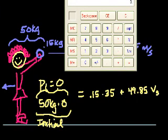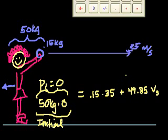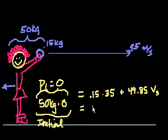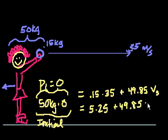So let's see. 0.15 times 35. So let's see. 0.15 times 35 is equal to 5.25. So that equals 5.25 plus 49.85 times the skater's velocity. The final velocity. And of course, this equals 0 because the initial velocity was 0.